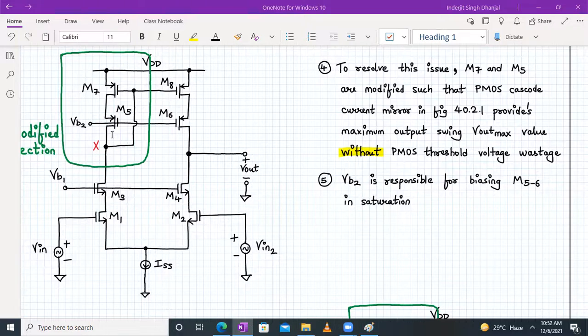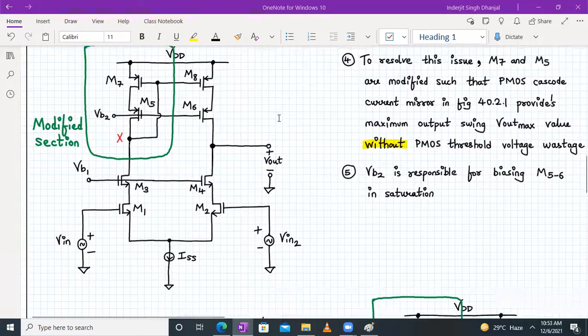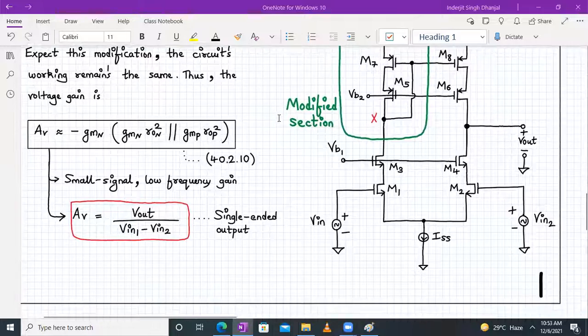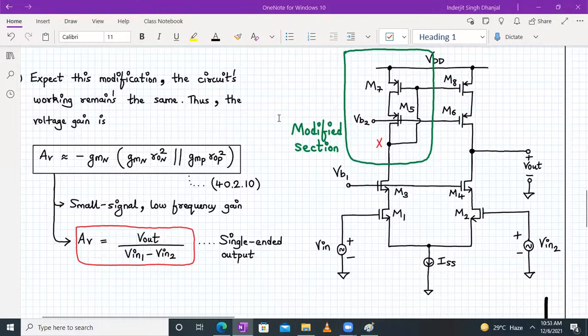The PMOS cascode current mirror provides maximum output voltage swing without the PMOS threshold voltage wastage. That's the modified section. The rest of the working remains absolutely the same. VB2 will be responsible for biasing M5 and M6 transistors in saturation.